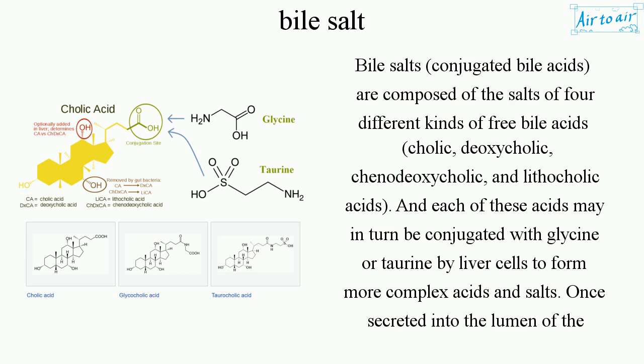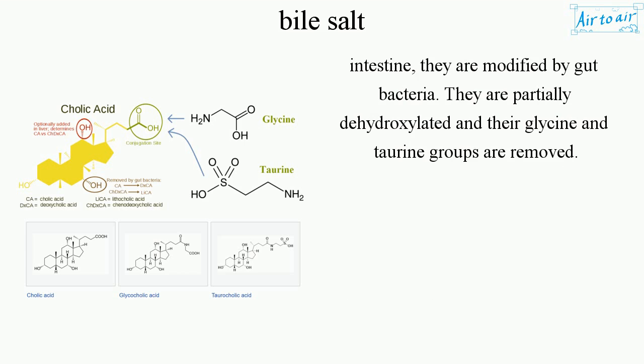Once secreted into the lumen of the intestine, they are modified by gut bacteria — they are partially dehydroxylated and their glycine and taurine groups are removed.